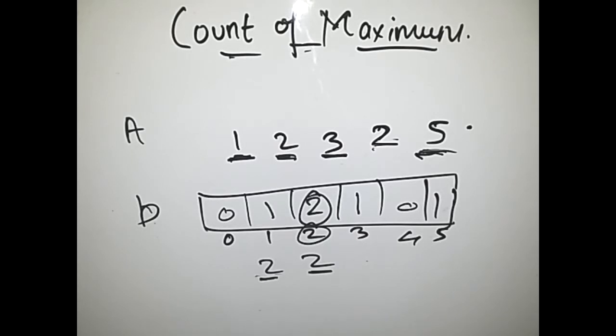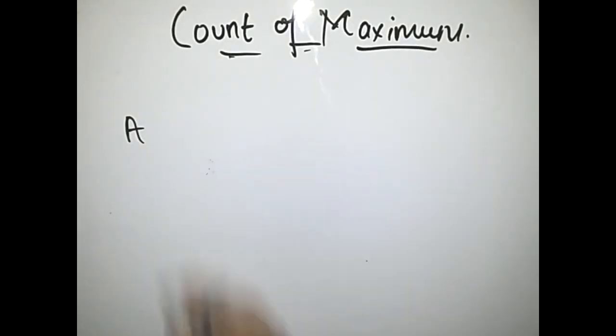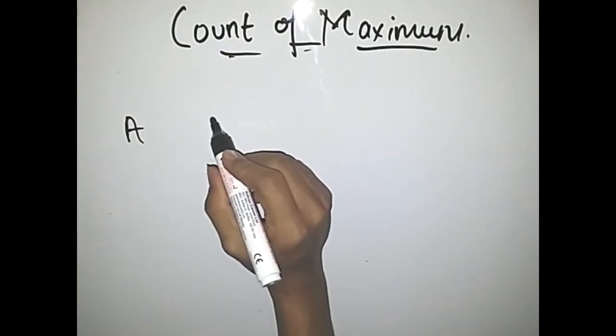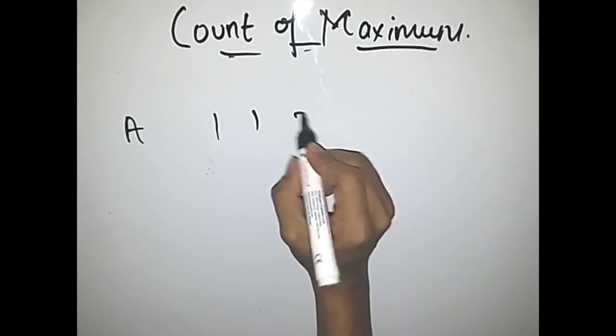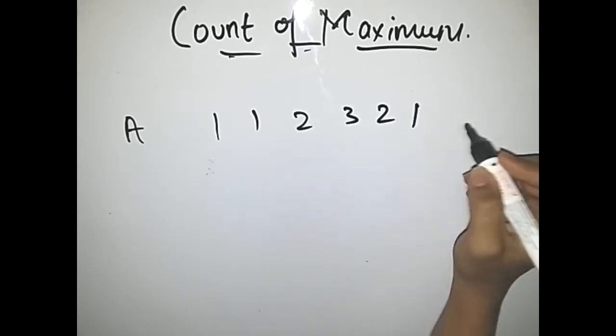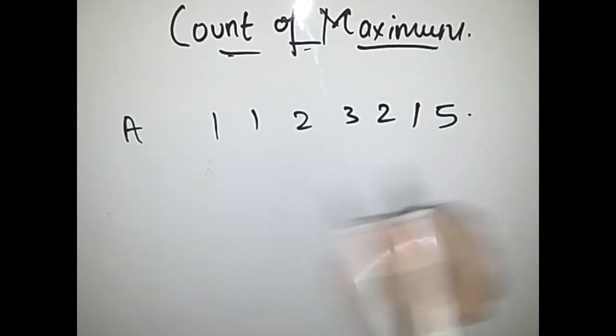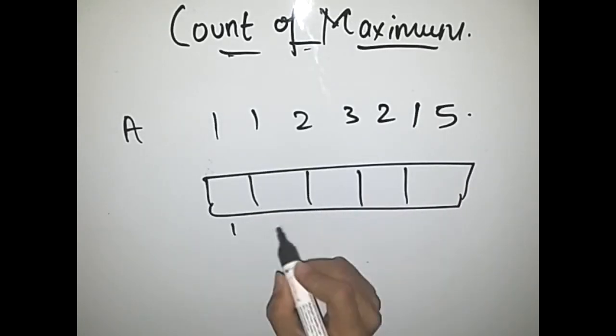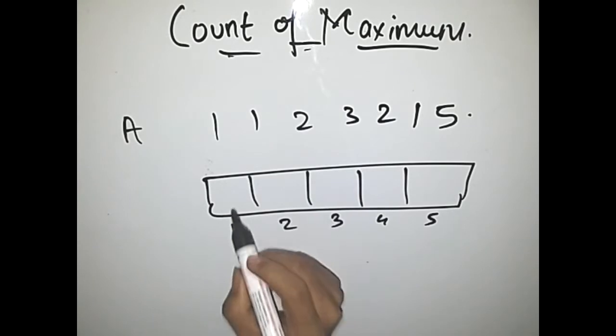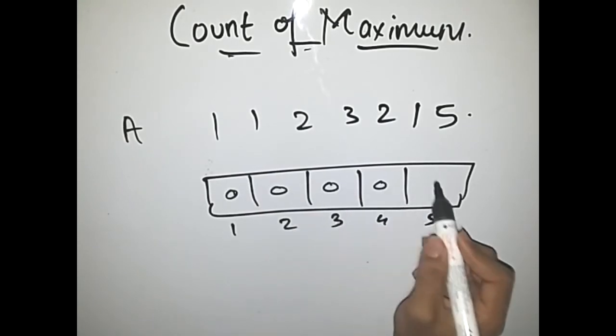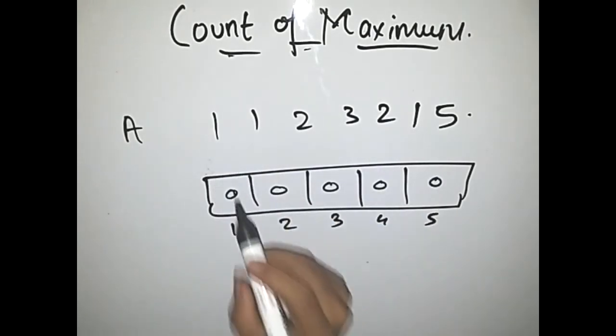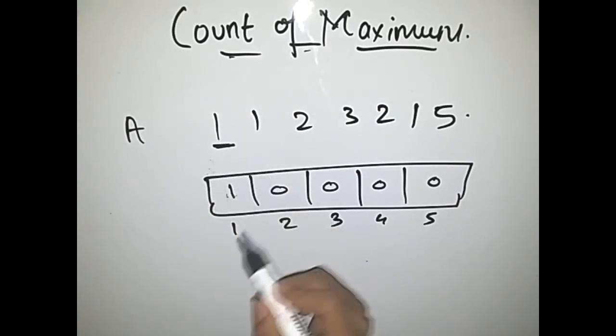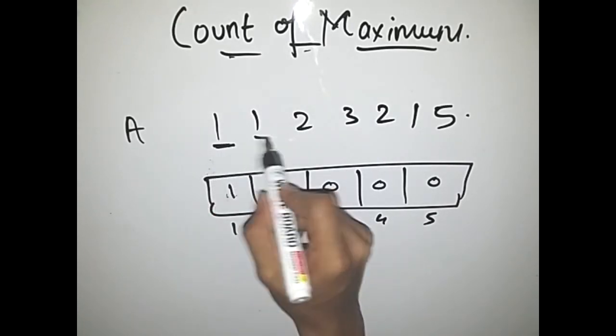Let's take another example. Consider if our array is 1 1 2 3 2 1 5. We'll again take our array and initialize each element with 0.